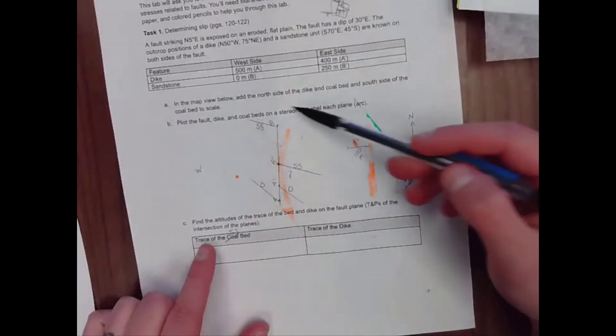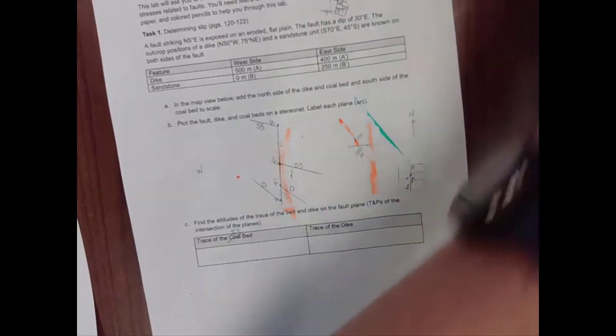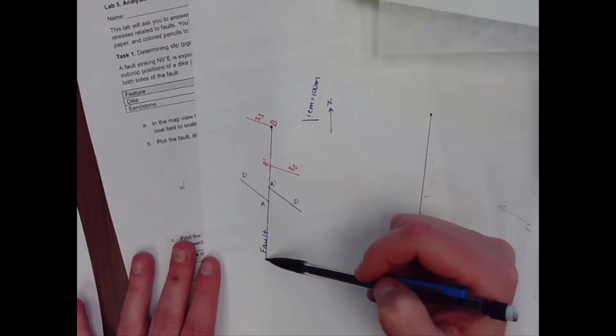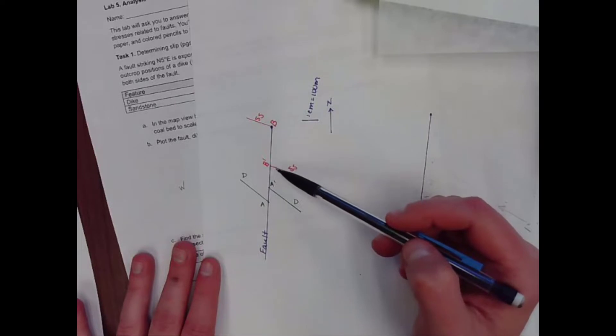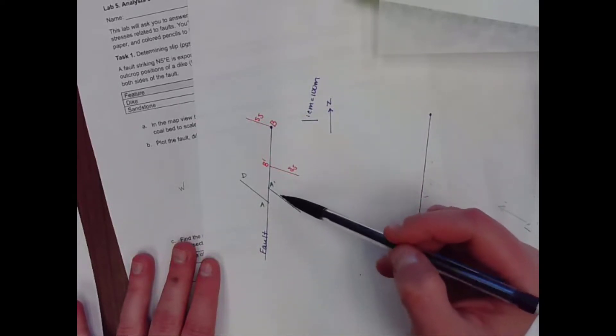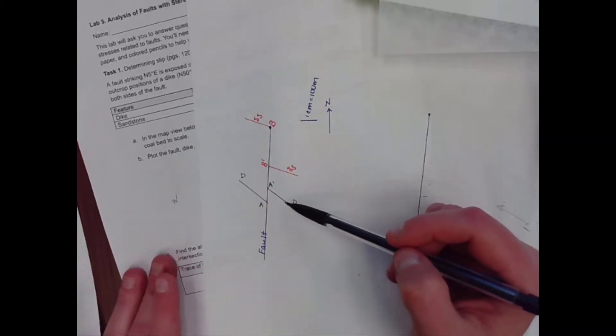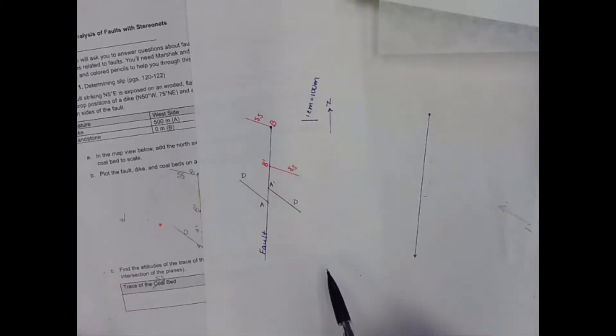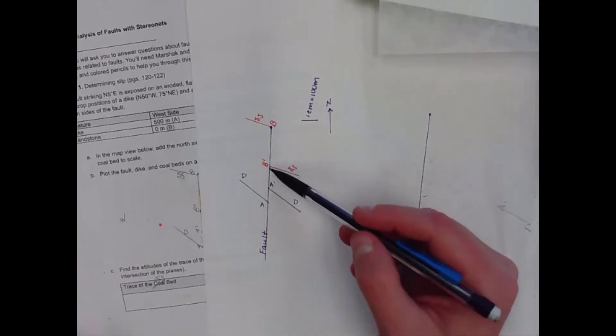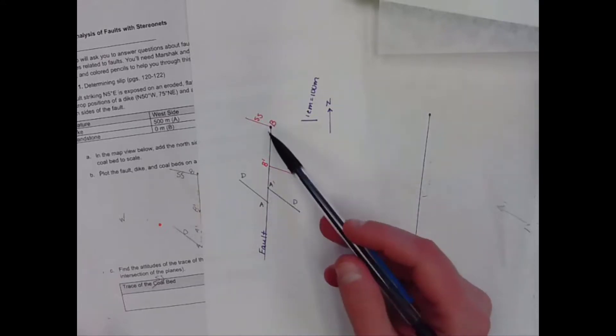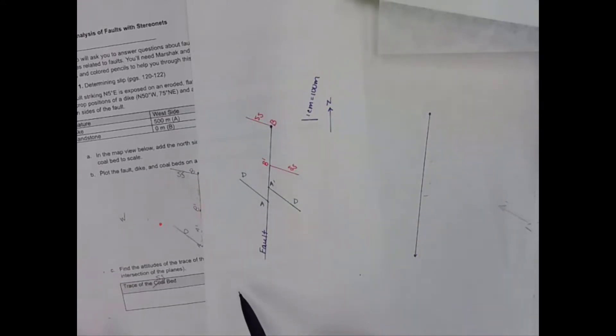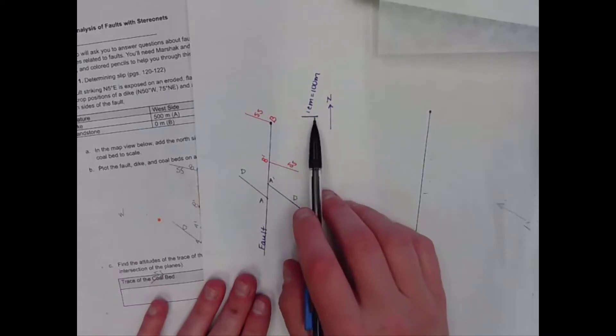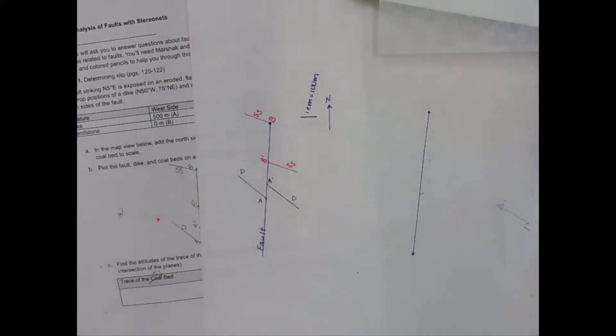After we have this map view of our problem, which I redrew over here, just to remind you, we had a fault that strikes north five east. We've got a sandstone bed that strikes south 70 east and we have a dike that strikes north 50 west, and those features were offset on either side of a fault where A prime and B prime are the units on the east side and A and B are where the units intersect on the west side of the fault. This is our view from above, our map view of the problem, and we have a scale of every one centimeter is 100 meters.